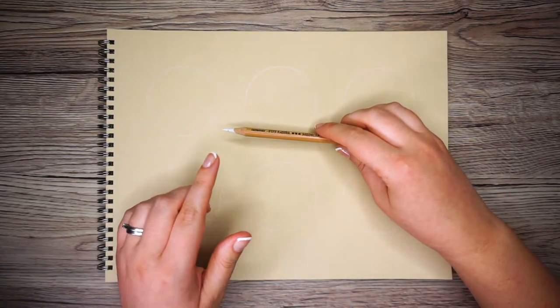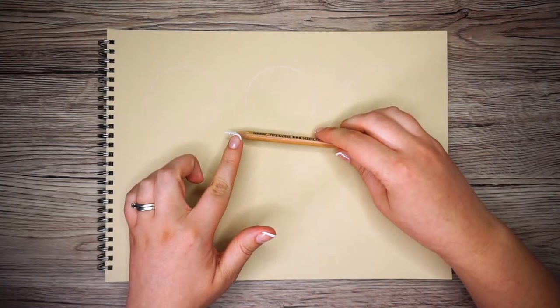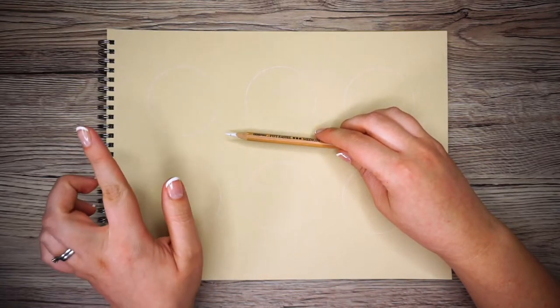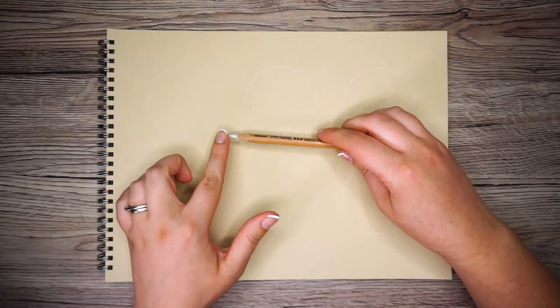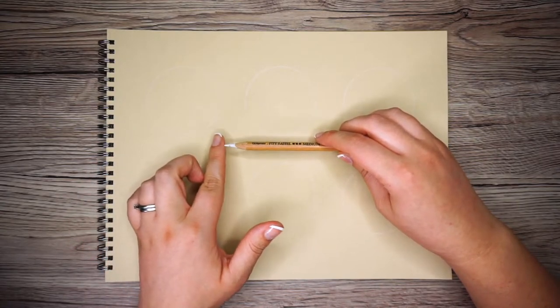The first thing I've done before anything else is make sure that my pencils are all sharpened. It'll be very difficult to do the shading method I'm about to show you without sharp pencils, so that's definitely step one.